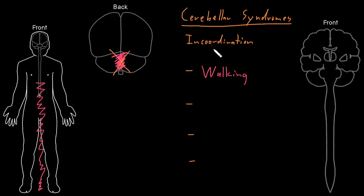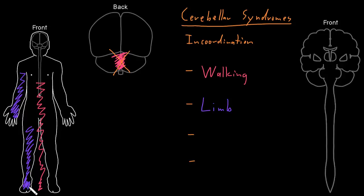With cerebellar dysfunction, we can also see in-coordination of limb movements — not walking, but other kinds of limb movements. For example, trying to reach out and grab something with your hand could be a very in-coordinated and inaccurate movement. The same thing with a leg — trying to reach out and touch something with your foot could result in a very inaccurate movement. Limb in-coordination is common with cerebellar dysfunction, and it's usually from dysfunction of the side of the cerebellum, not the middle part, but the lateral side.